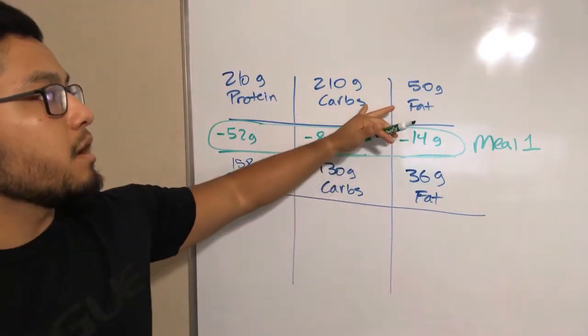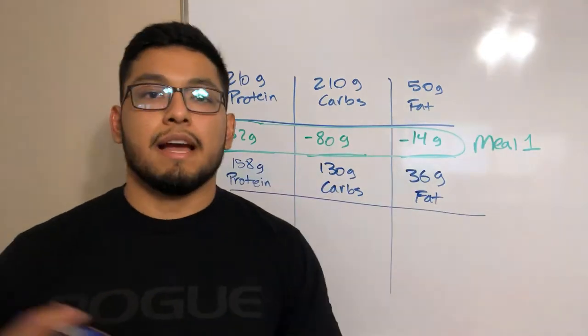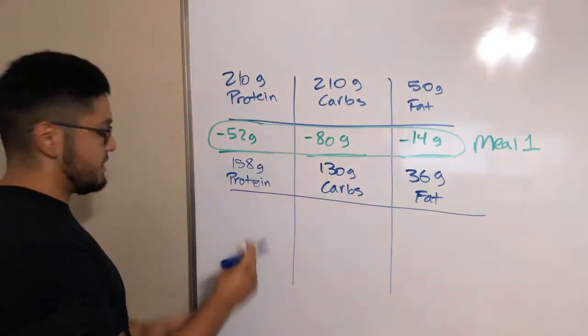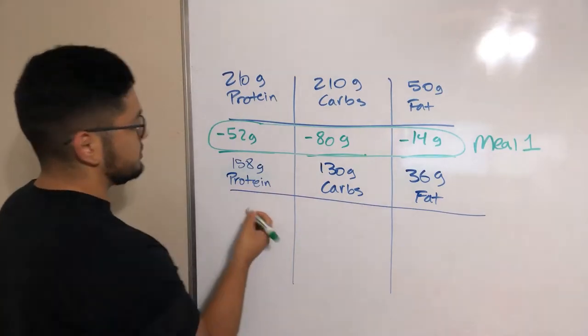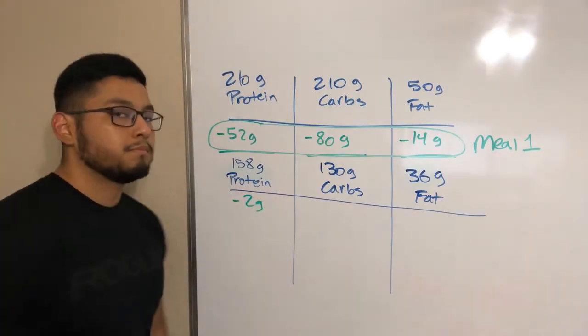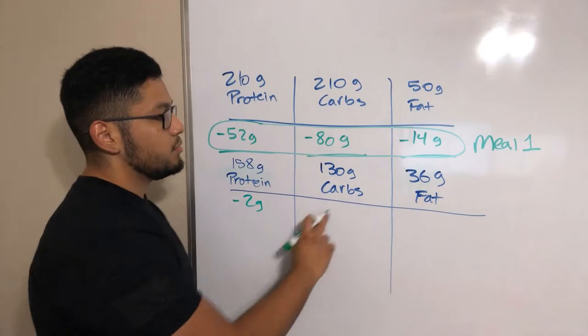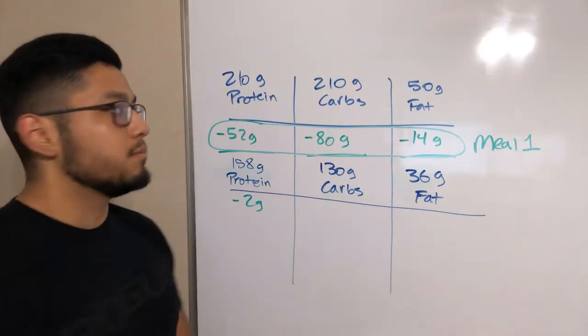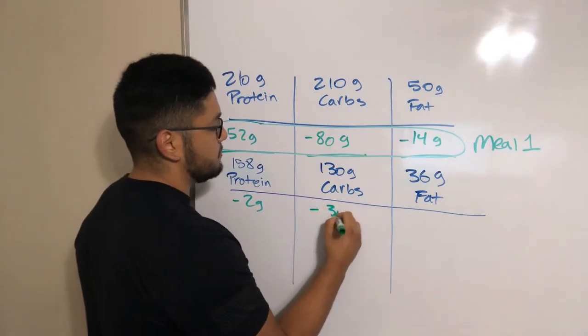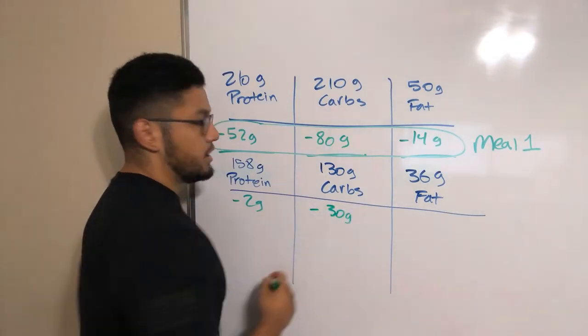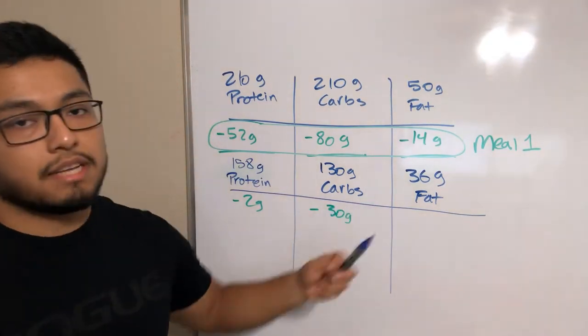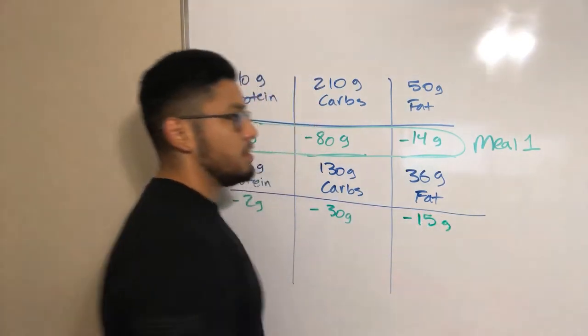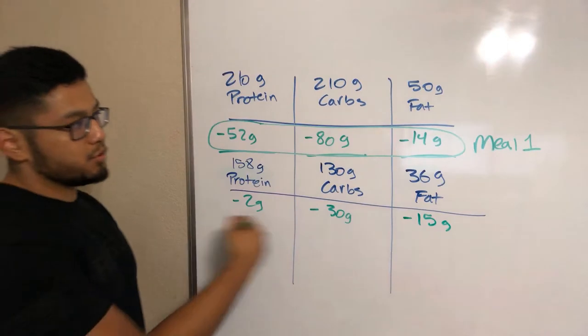Now the beauty of this is that let's say you want to have ice cream. Ice cream usually doesn't have protein in it, we'll say two grams of protein. Then we have carbs, let's say two scoops of ice cream, 30 grams of carbs. Then fat, usually has a lot of fat, let's say 15 grams. Again, you subtract this.